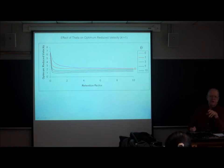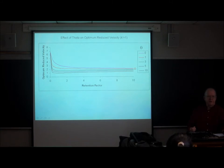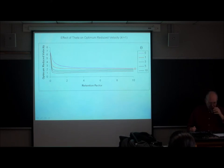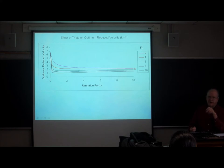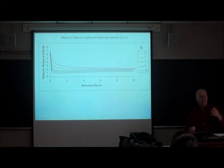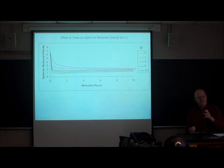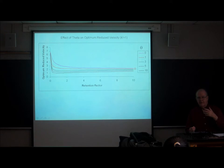You want to work at a high optimum reduced velocity because that will get the separation done in the least amount of time. There are a lot of trade-offs you've got to make to really do open tubular chromatography or HPLC — to do it fast and also to maintain high resolving power.